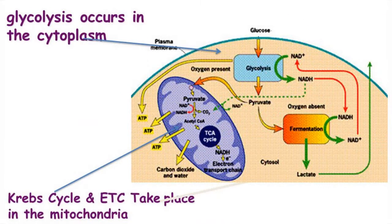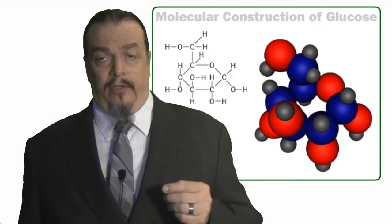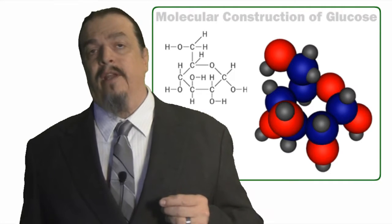Glucose is carried to your body's cells through your bloodstream. Perhaps you know someone who has the disease diabetes who has to monitor levels of glucose in their blood because having too much or too little blood sugar can have disastrous consequences. Once the glucose molecule arrives at the cell the cell membrane lets it in and glycolysis begins in the cell's cytoplasm.